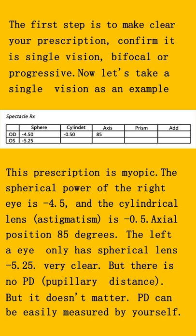This prescription is myopia. The spherical diopter of the right eye is 4.5 and the cylinder degree astigmatism is 0.5. Axis position 85 degrees. The left eye only has a spherical diopter of 5.25.